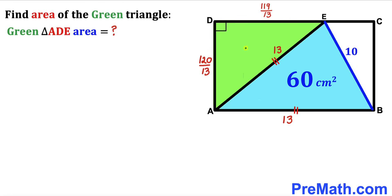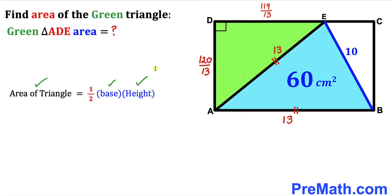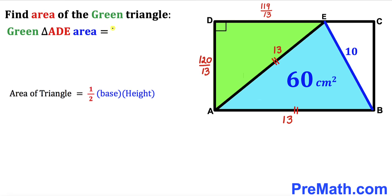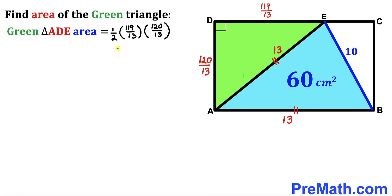For the final step, we calculate the area of the green shaded triangle ADE using Area = ½ × base × height. The base DE is 119/13 and the height AD is 120/13. So: Area = ½ × (119/13) × (120/13) = 7140/169 cm².